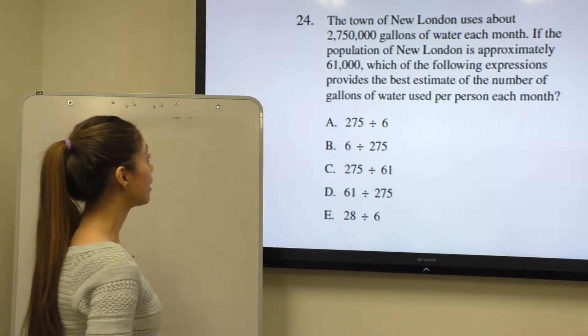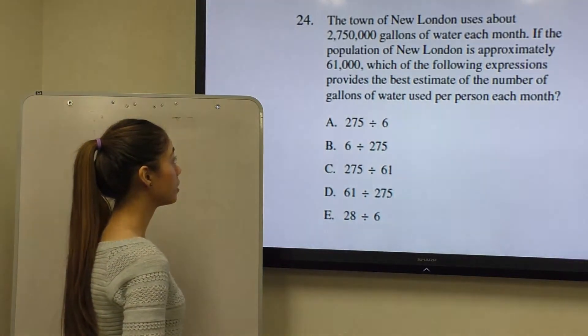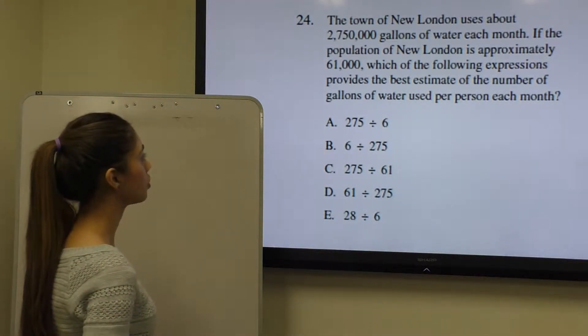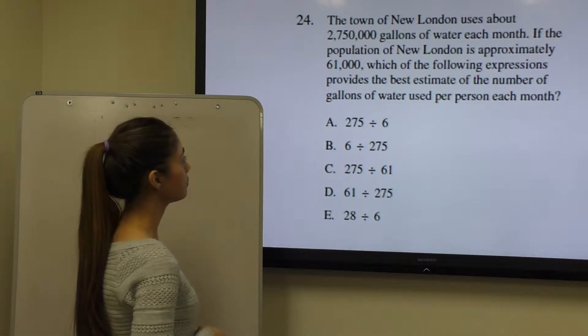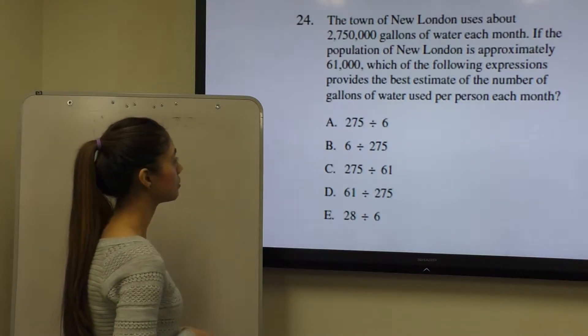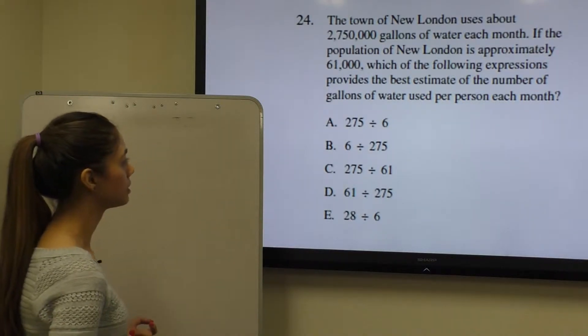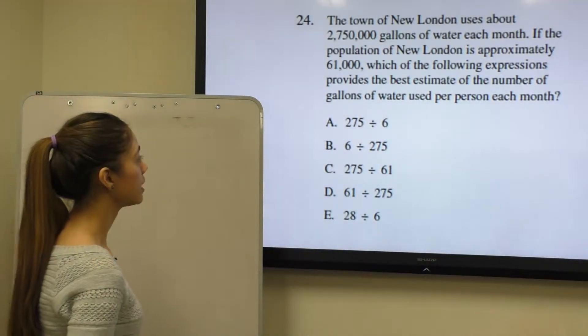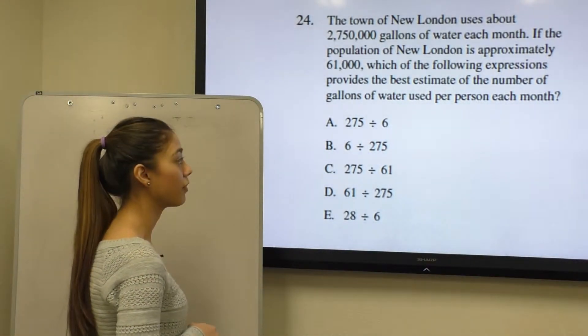Question 24 says the town of New London uses about 2,750,000 gallons of water each month. If the population of New London is approximately 61,000, which of the following expressions provides the best estimate of the number of gallons of water used per person each month?